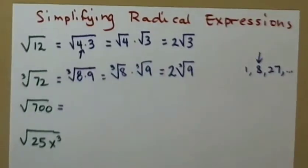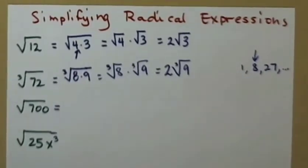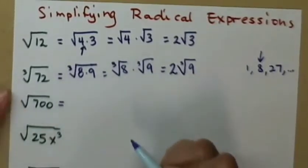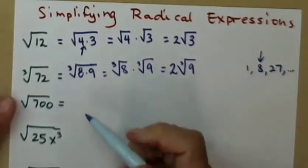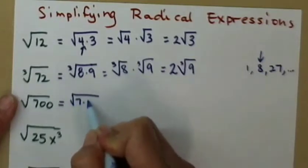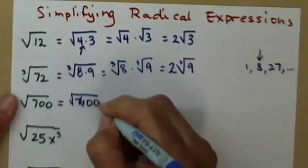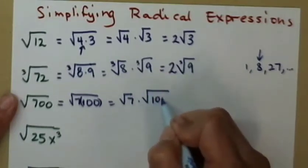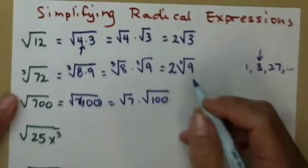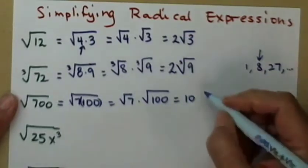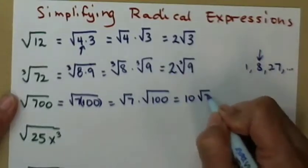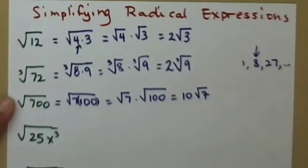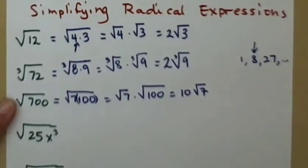Try the square root of 700. We look for the perfect square factor: 700 equals 100 times 7. So we write the square root of 7 times the square root of 100. The square root of 100 is 10. The square root of 7 is irrational — we don't want a decimal, we want exact answers. So our answer is 10 times the square root of 7.